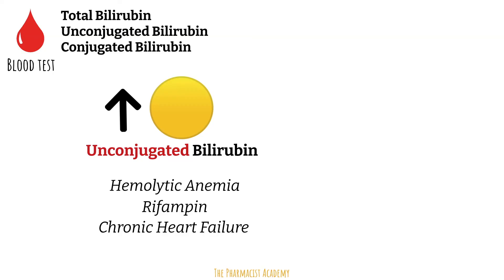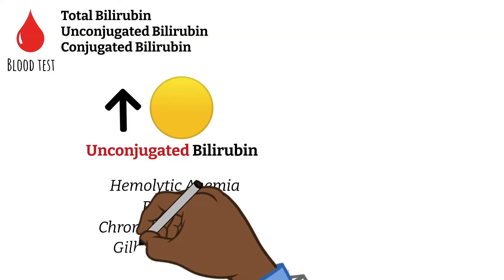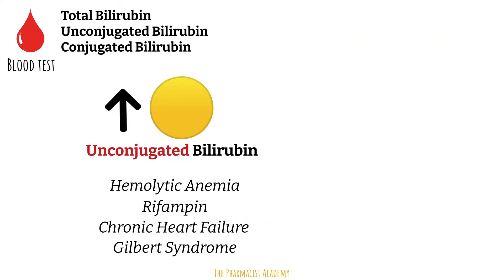Lastly, Gilbert syndrome, which results in a deficiency in uridine glucuronyl transferase — the enzyme responsible for the conjugation of bilirubin — means we will have more unconjugated bilirubin just circulating.